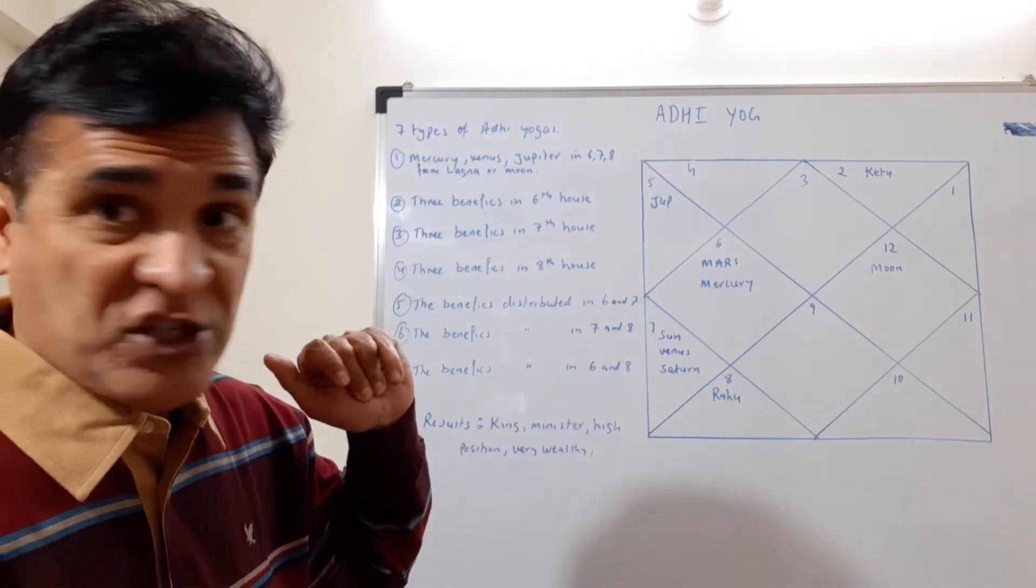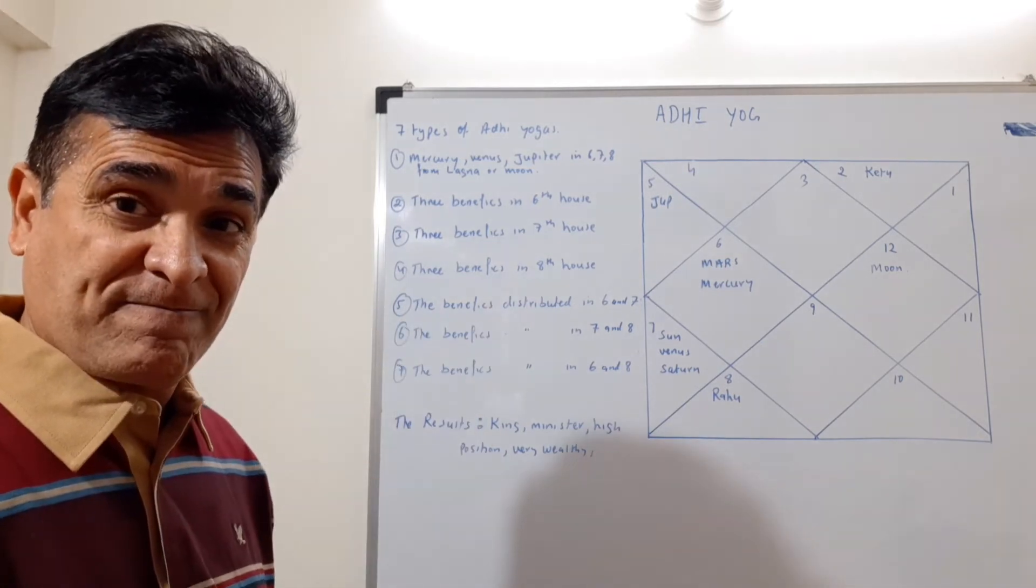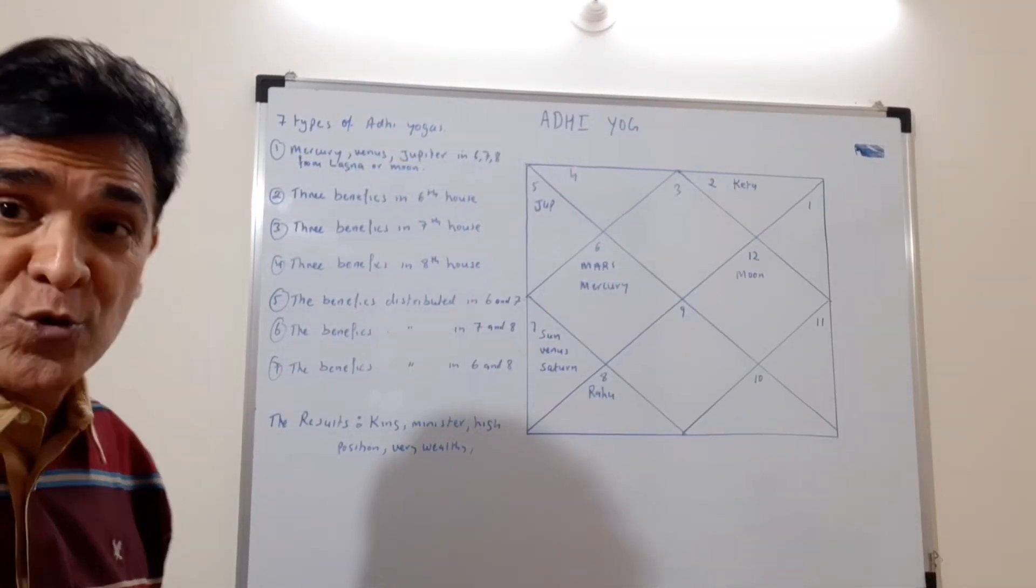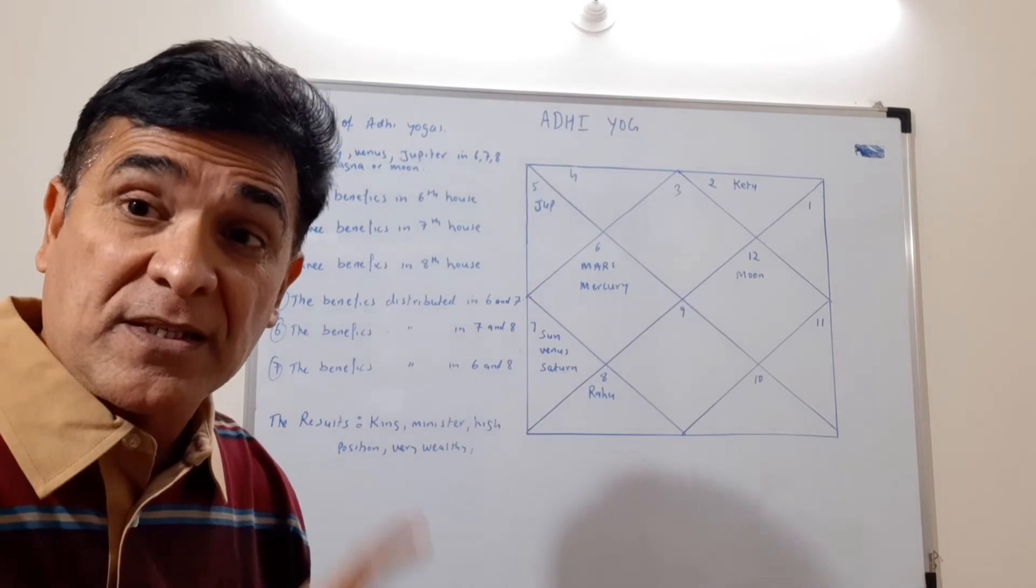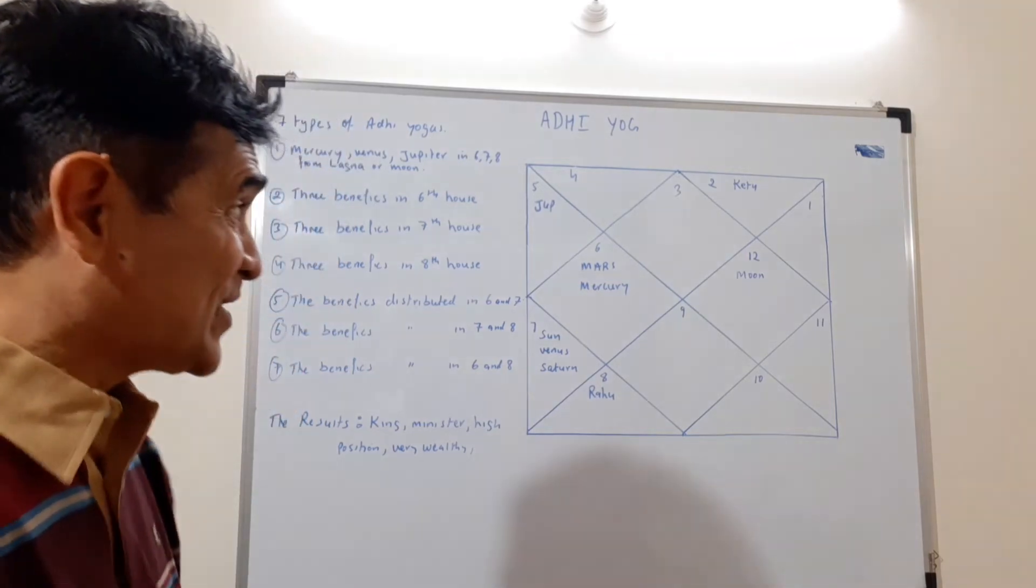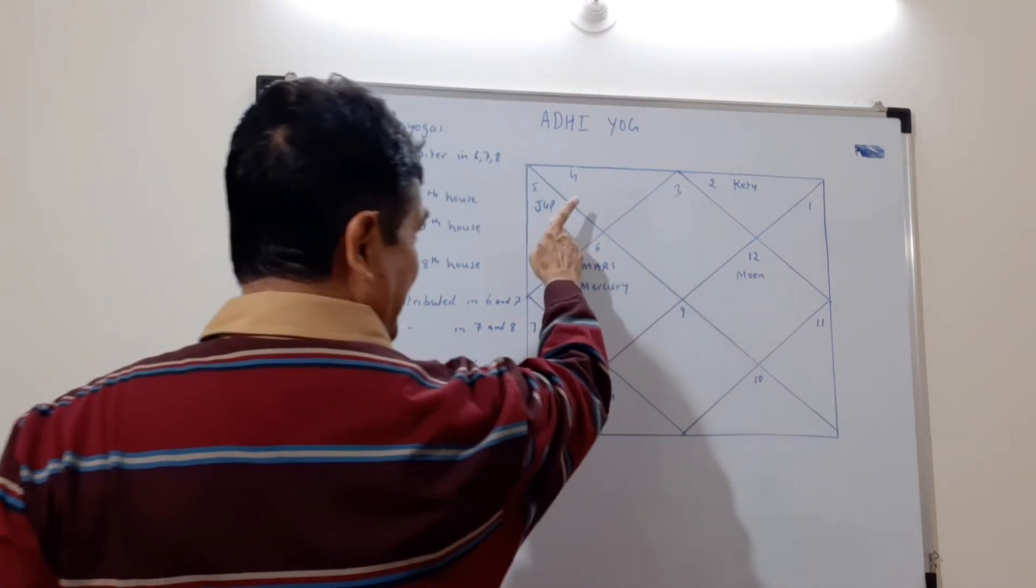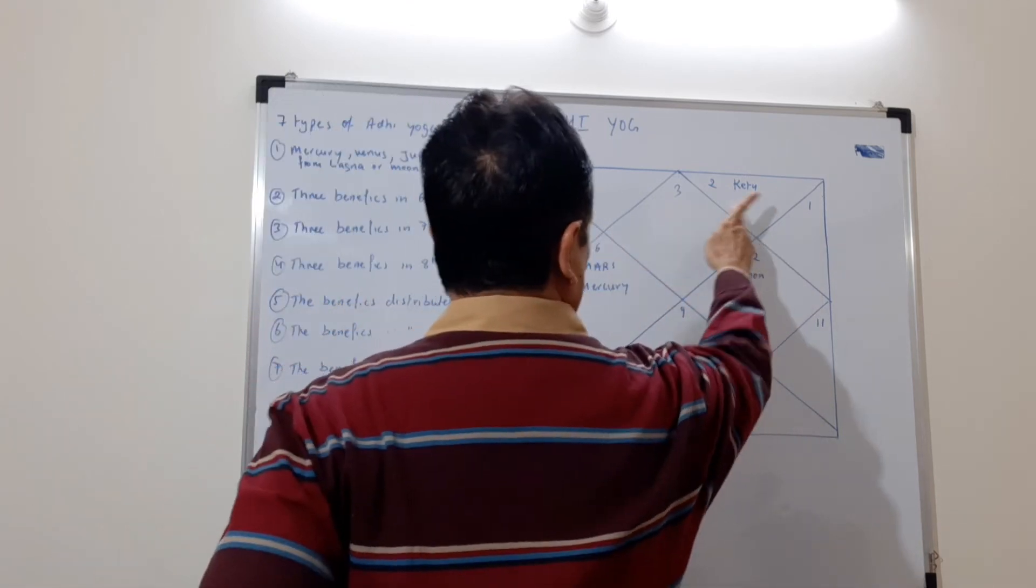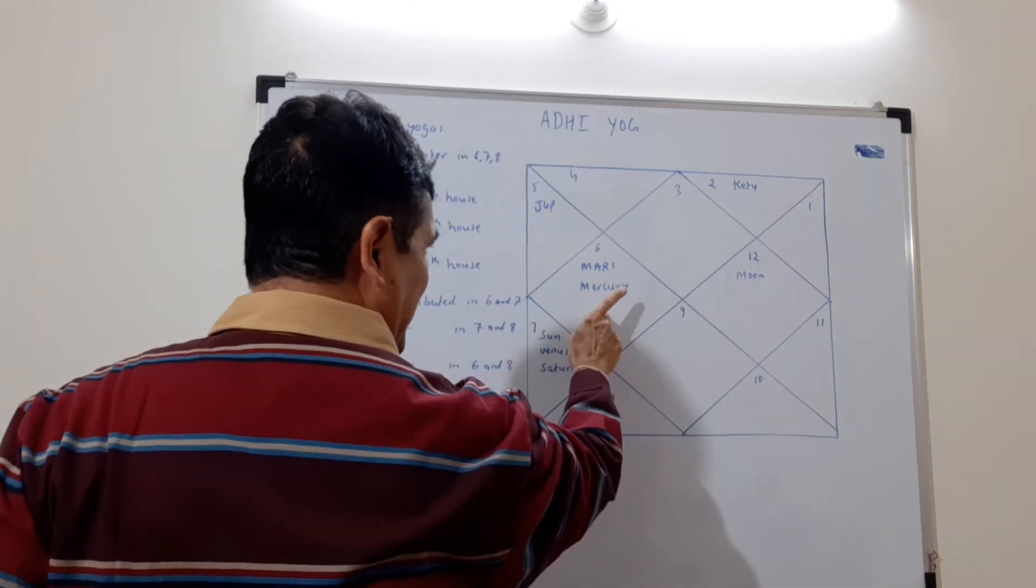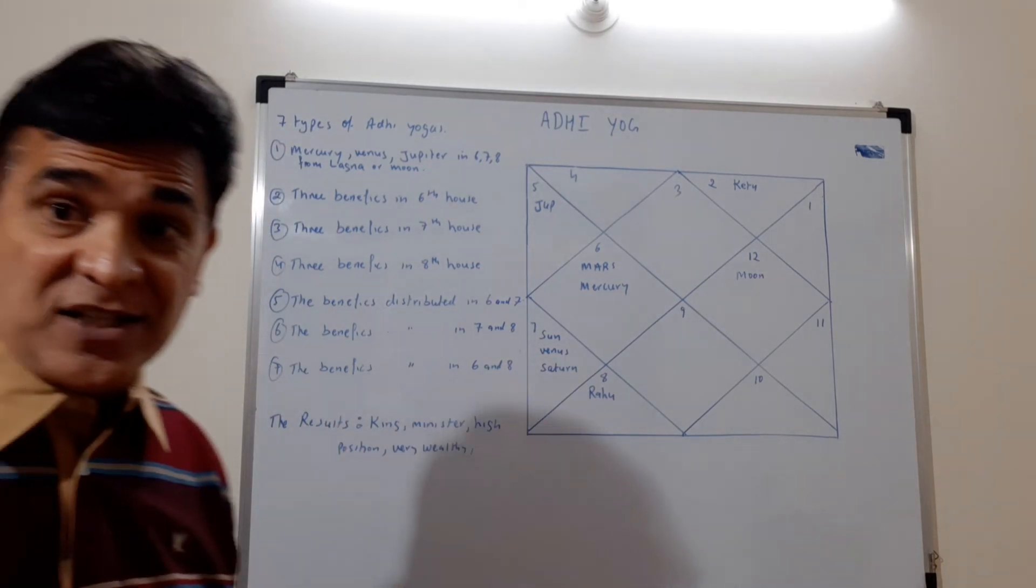Now look at this chart. This chart belongs to Bill Gates. So from Moon you can see the sixth house from the Moon - 1, 2, 3, 4, 5, 6 - this is the seventh, this is the eighth. Can you see all the benefics sitting distributed? That is what has made him what he is.